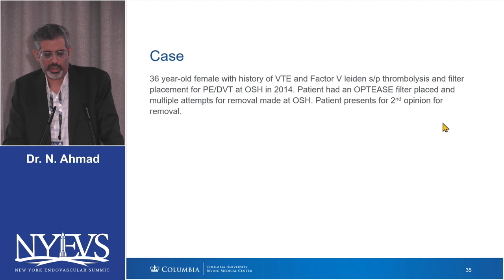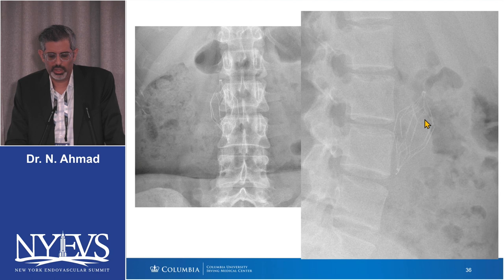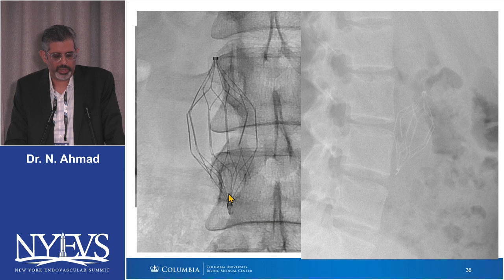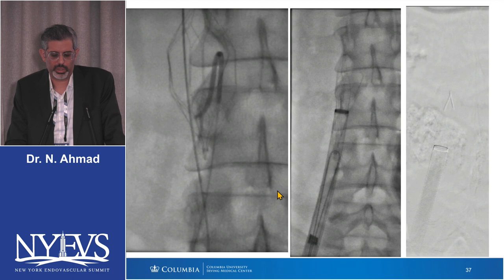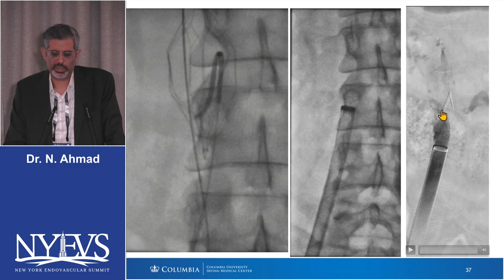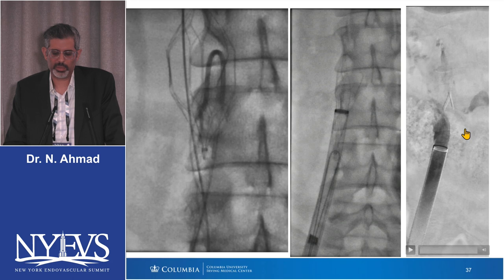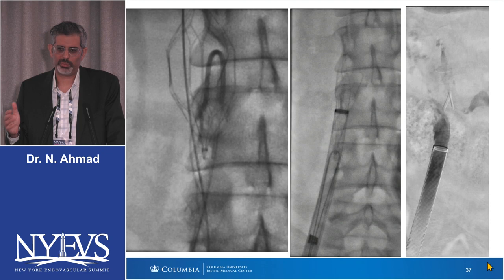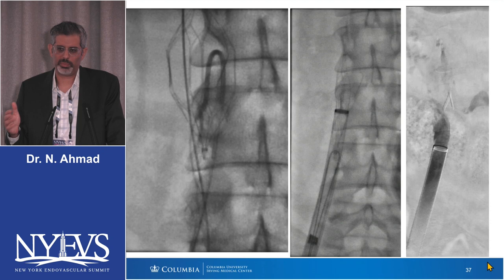Final case: 36-year-old female, Factor V Leiden, with an Optees filter and multiple prior failed removal attempts. She came to Columbia for a second opinion. The Optees was actually fractured — there were fragmented struts. The plan was wire access from above and below. I did a wire loop snare technique from below, then lasered it from the bottom and pulled through with the wire loop snare. Remaining fragments were left. Whenever you use laser, you can get this type of bleed — pretty typical — so quickly get wire access across and put a balloon up. These usually tamponade well afterwards.